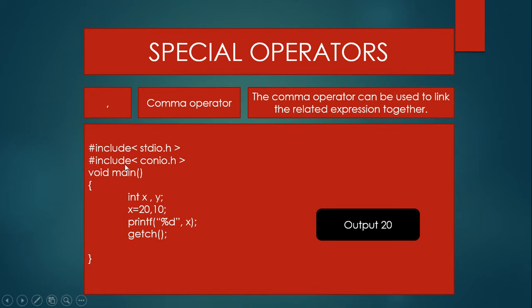I am taking a simple example and I write here: #include stdio.h, #include conio.h — these are the header files for C — then void main as the main function, which is the starting point for the compiler. I am declaring here the variables X and Y with data type int, and I am using the comma operator to separate X and Y.